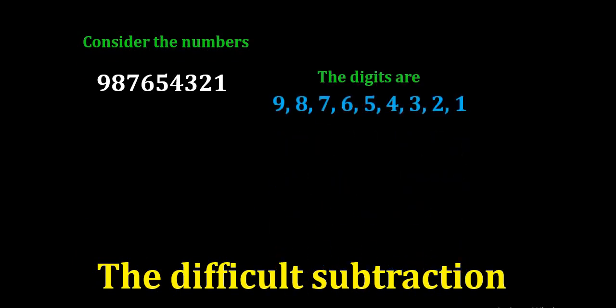Here the impossible subtraction goes. Consider the number 987654321. Now, this is a nine-digited number. And what are the digits? The digits are 987654321.